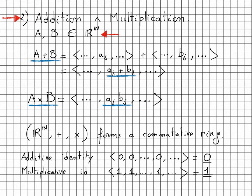We can easily verify that R^N forms a commutative ring under addition and multiplication with additive identity, which is a constant sequence 0, which is simply denoted by a 0 with a bar below, and multiplicative identity given by the constant sequence 1.